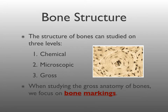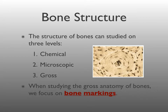Moving on, let's talk about bone structure. The structure of bones can be studied on three levels: chemical, microscopic, and gross. We've already discussed the chemical structure — bone is composed of organic components and inorganic mineral salts called hydroxyapatites — and you've already studied the microscopic structure in histology. From this point forward, we'll focus on gross anatomy, which involves identifying all the ridges, bumps, grooves, and other structures visible without a microscope. These are called bone markings.